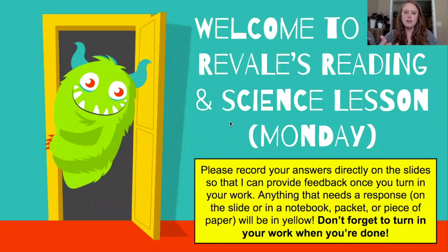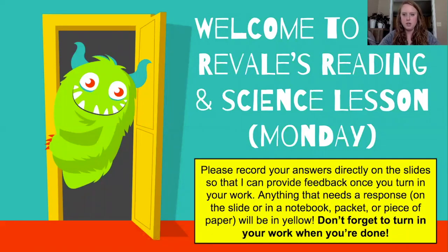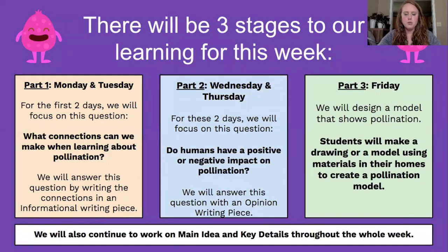As you can see, these are exactly the slides I would present to the students. I would remind them that they always had to write in the yellow boxes on the slides so I could provide feedback, or they could upload a picture. I would also start with giving them the learning goal and the success criteria — the words would be highlighted as I explained how we would achieve those things. For most weeks there would be stages to our learning: for Monday and Tuesday, students would work on connections and pollination, and throughout the whole week, main idea and key details was worked on no matter what we were learning.